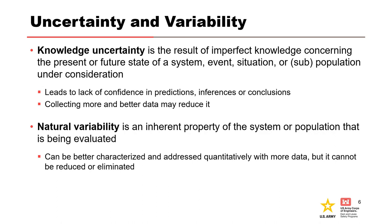Sometimes we are unsure of our model's ability to adequately represent reality, and we also have uncertainty in the parameters we put into the model, which can be due to a limited amount of data or difficulties in measurement. Natural variability is the inherent randomness in a natural process or property. It can be better characterized with more data, but in principle it cannot be reduced or eliminated.